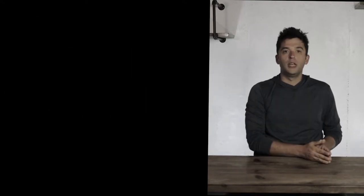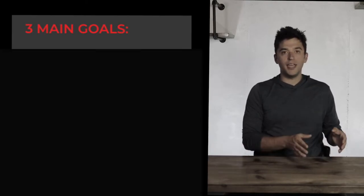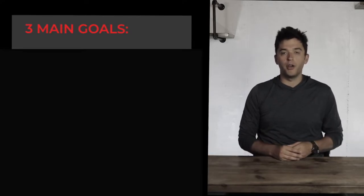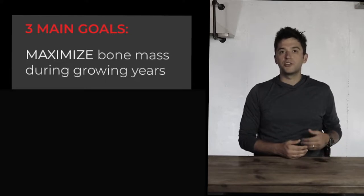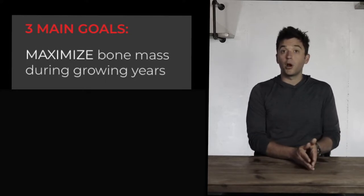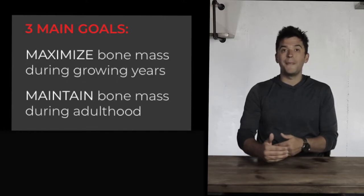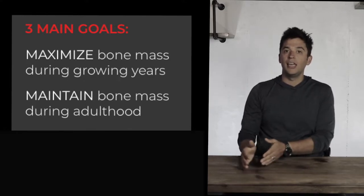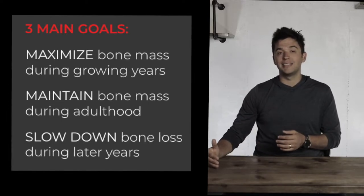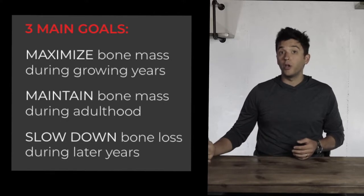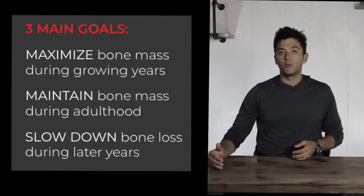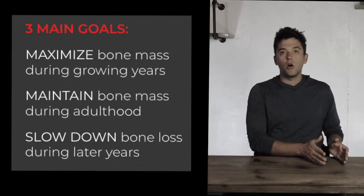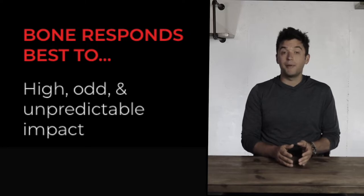Across our life we have three phases for bone health. During early years, we want to accrue as much bone as possible. During middle years — 30s to 60s — we want to maintain bone mass. In later years, we want to minimize bone loss. Across all three phases, staying active and engaging in high-impact, odd-impact, and variable-impact activities is one of the key ways to achieve this.